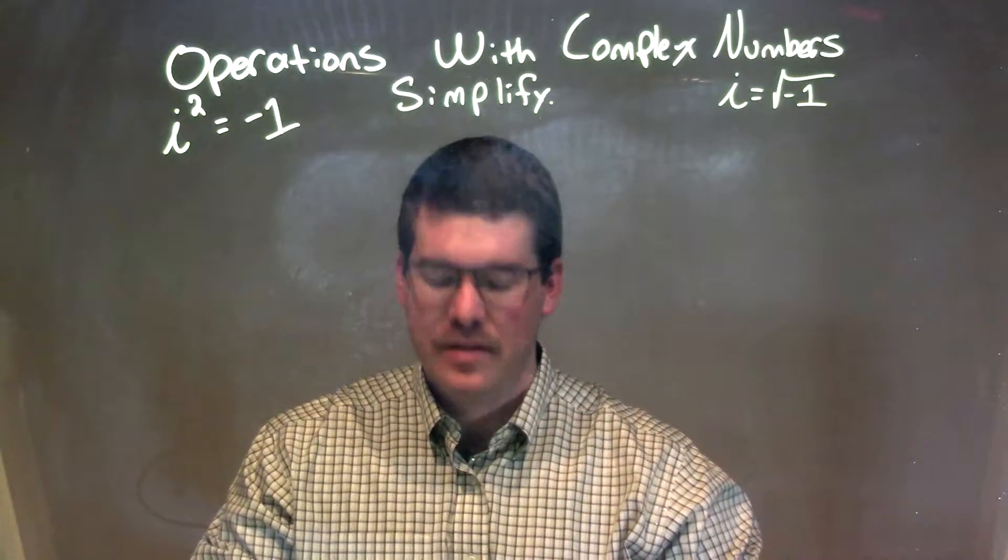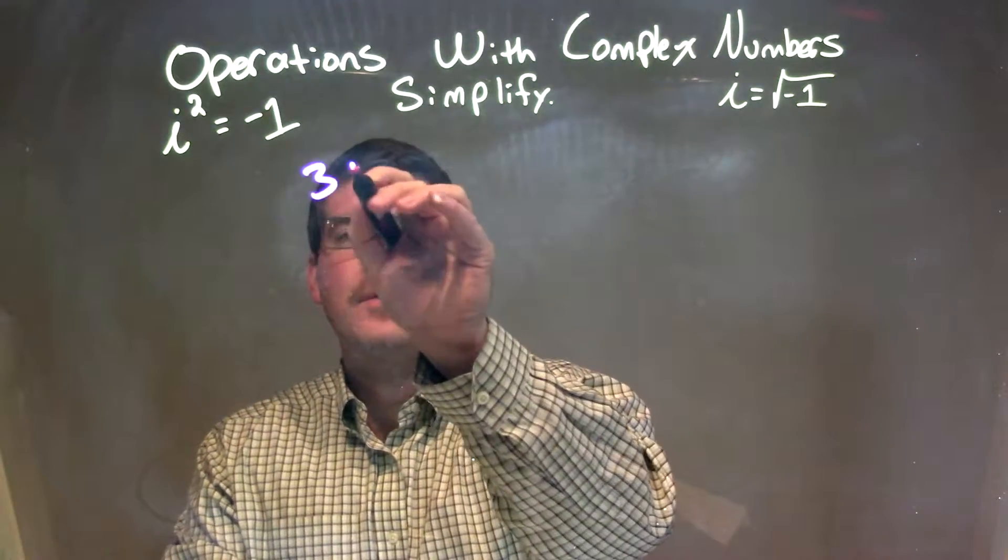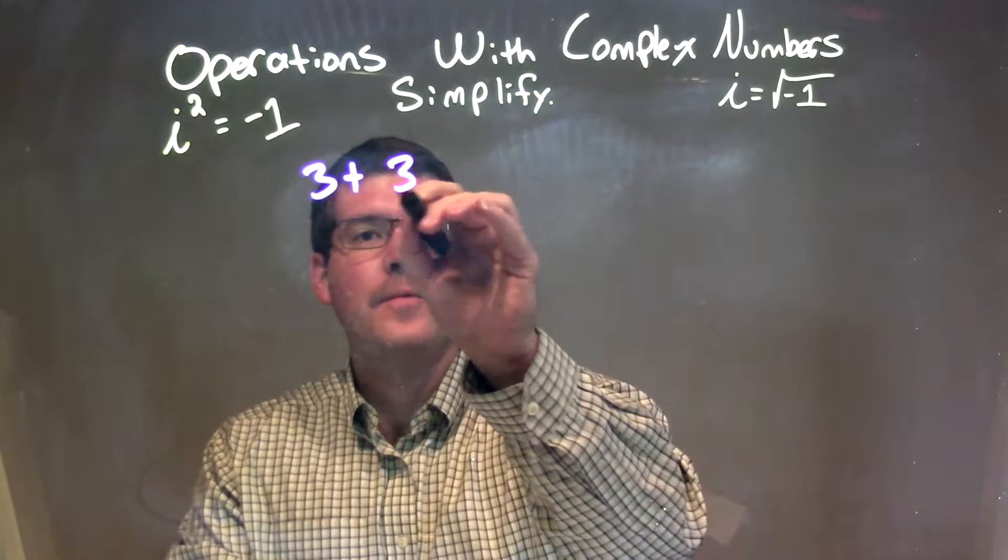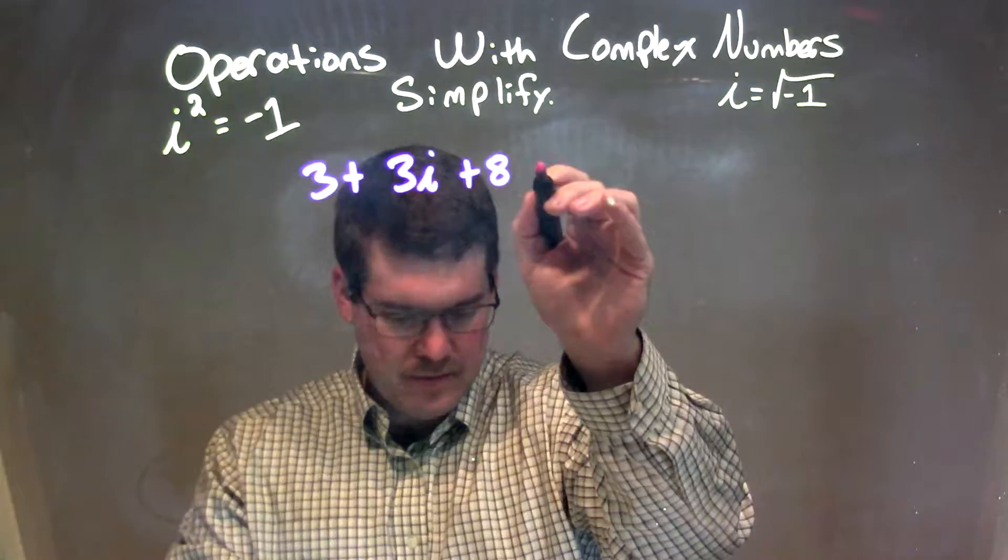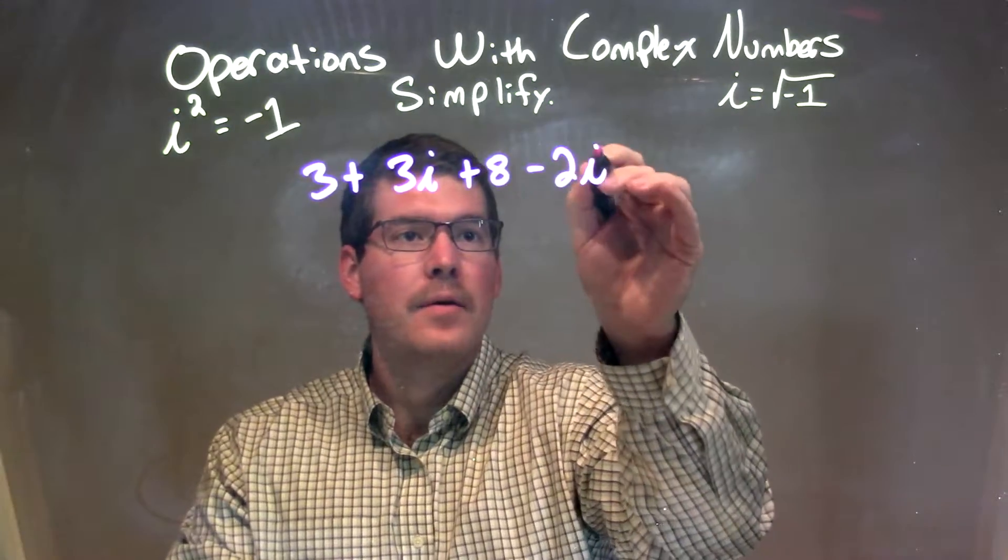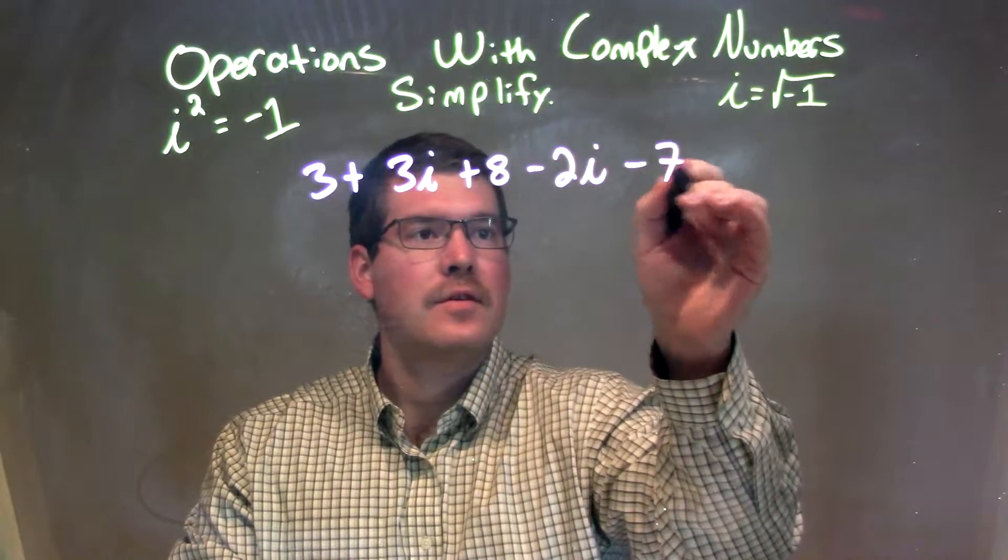So if I was given this: 3 plus 3i plus 8 minus 2i minus 7.